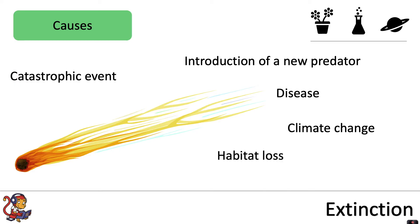Habitat loss is another cause of extinction. Habitat loss can be linked to climate change, or it can be linked directly to human activity through things such as deforestation to increase the amount of land available for farming, or humans destroying habitat for building houses, roads, and other infrastructure. Another cause of extinction directly influenced by humans is hunting.